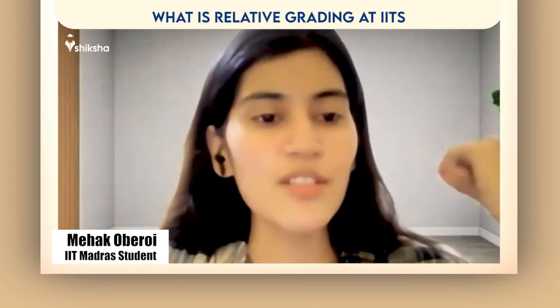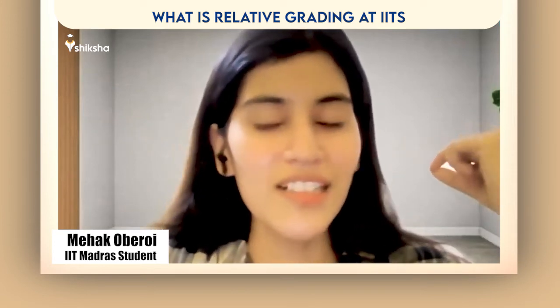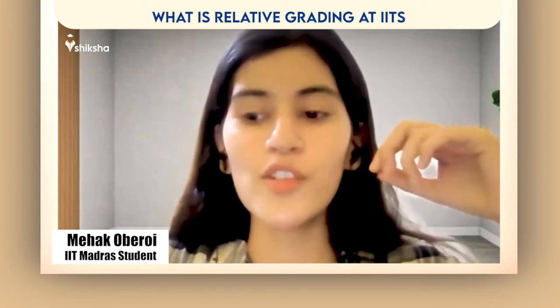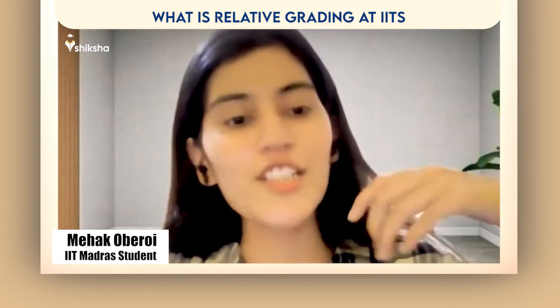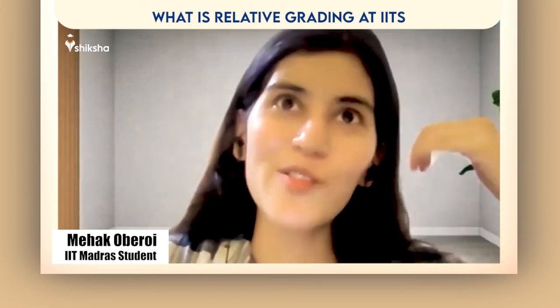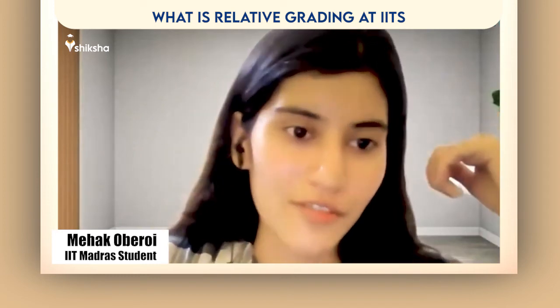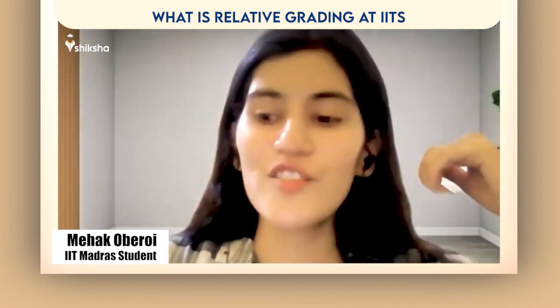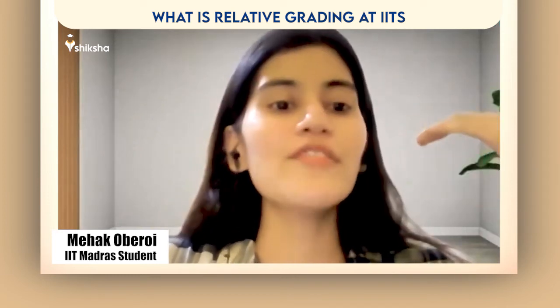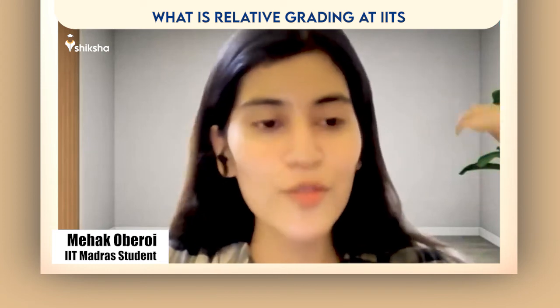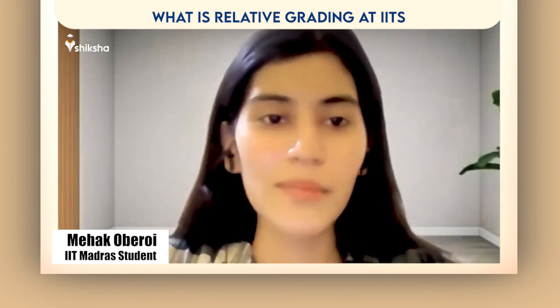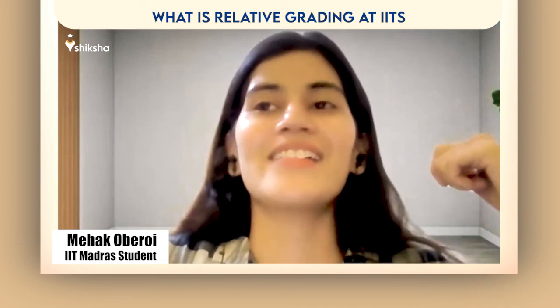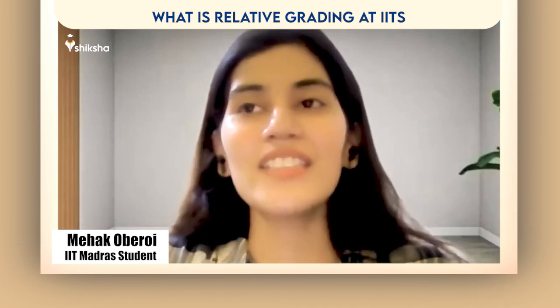The highest scorer only gets a 10 GPA if they score 1.5 times the average. But if the average is 85, how can anyone score 1.5 times that out of 100? That's how they've kept it — it's very tough, sometimes almost impossible, to score a 10 GPA. And that's how peer pressure is created.